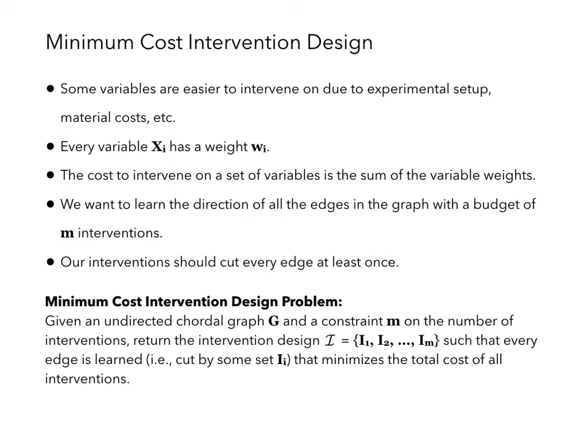In practice, some variables may be easier to intervene on due to things such as material cost. In this work, we consider the minimum cost intervention design problem. Here, every variable has a weight wi, and the cost to intervene on a set of variables is the sum of the variable weights. Our goal is to learn the direction of all the edges in the graph with a budget of m interventions, which means that every edge should be cut by at least one intervention.